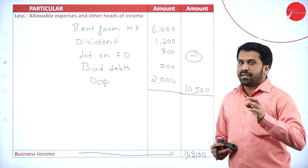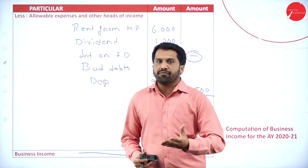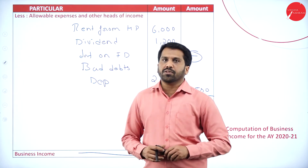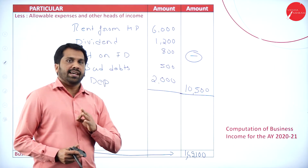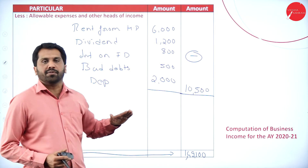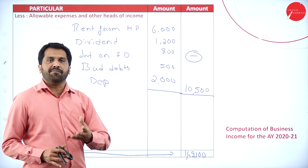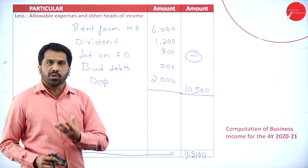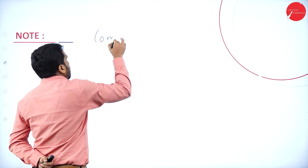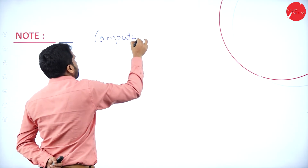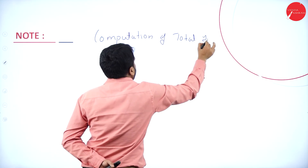Remember, in your examination you will get up to this — you need not do further. For your B.Com or BBA examination, up to business income you are supposed to do. But for the safer side, if you want to know how to do total income, I will show that now — computation of total income.